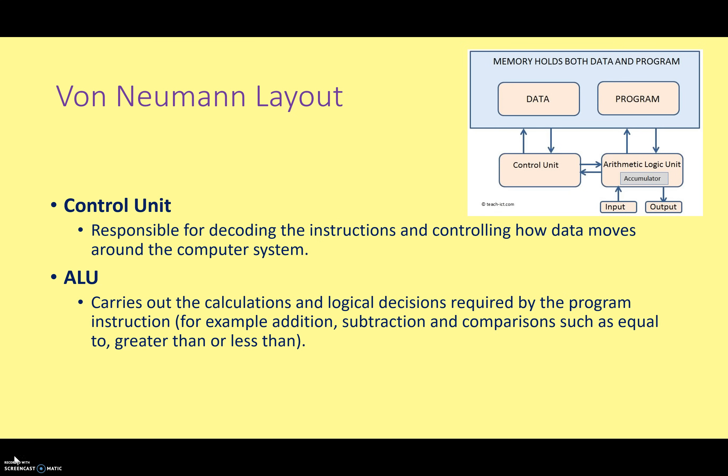We also need to transfer data around our computer system, and we do this using buses. Buses are simply the wires that carry the data around the computer. In this diagram, they're denoted by the arrows connecting the different parts together. If you look at a motherboard very closely, you'll see the little wires running along it — these are the buses that carry the data around different systems. The accumulator in the arithmetic logic unit is a type of register, and registers are memory locations within the computer system that have a specific function, which we'll look at in greater detail in just a moment.